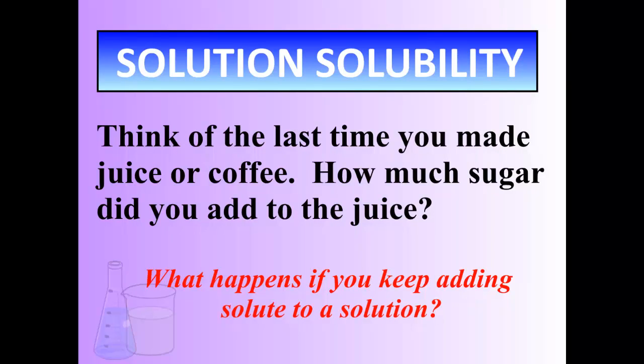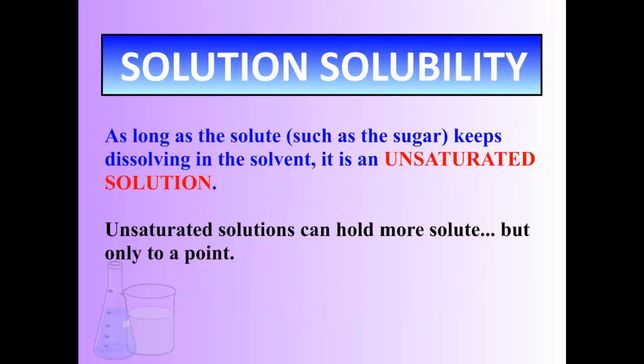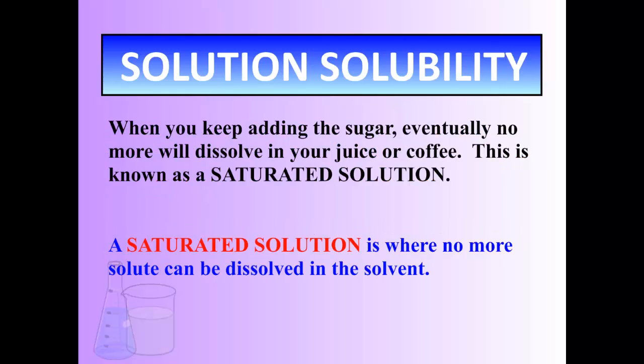Now, think of the last time you made juice or coffee. How much sugar did you add to the Kool-Aid? How much sugar did you add to the coffee? What happens if you keep adding sugar, a solute, to coffee, the solution? Well, there's two things that can happen. If you keep adding sugar and it keeps dissolving, that means that you have an unsaturated solution. More solute can be dissolved. Unsaturated solutions can hold more solute, but only to a point. When you keep adding sugar, eventually no more solute will dissolve. And this is what we call a saturated solution. A saturated solution is where no more solute can be dissolved in the solvent because it can't hold anymore.